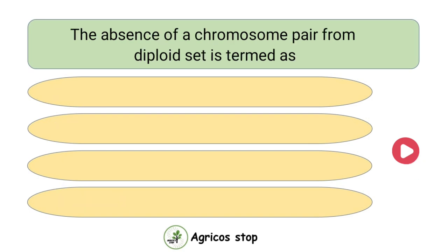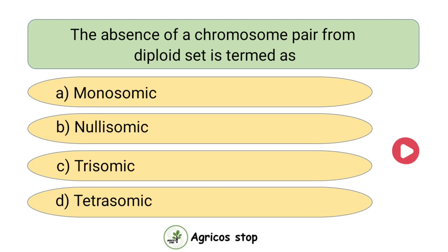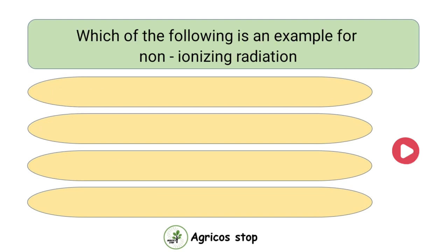The absence of a chromosome pair from diploid set is termed as? Options are monosomic, nullisomic, trisomic, and tetrasomic. The answer is nullisomic. The absence of a chromosome pair from diploid set is termed as nullisomic.